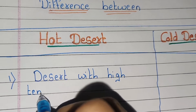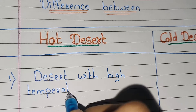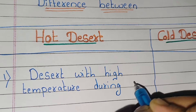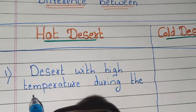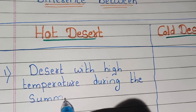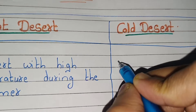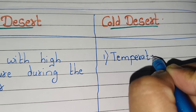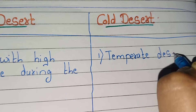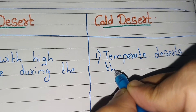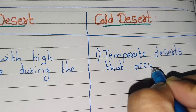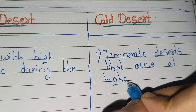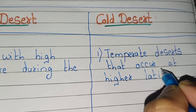First point: in hot desert, it is a desert with high temperature during the summer. And in cold desert, it refers to temperate deserts that occur at higher latitudes.